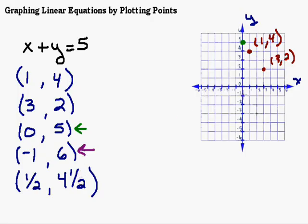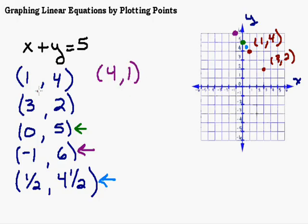Next, plot (-1, 6) — negative one on x, up six. Then (1/2, 4.5) — over just a half, up four and a half, right in the middle of the box. Notice that all these points are in a straight line. Even a neighbor's point like (4, 1) — going over four, up one — still falls on the same line, because four plus one equals five.